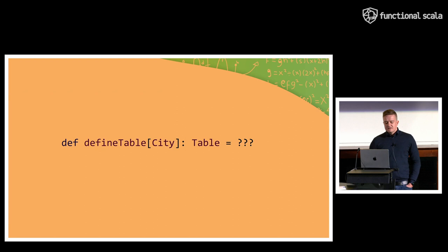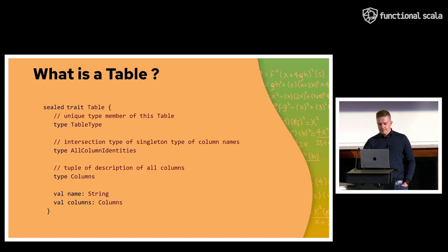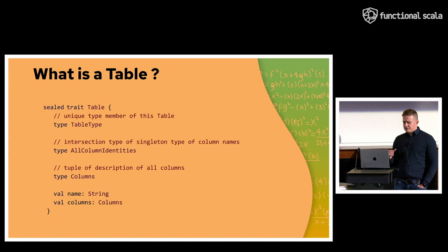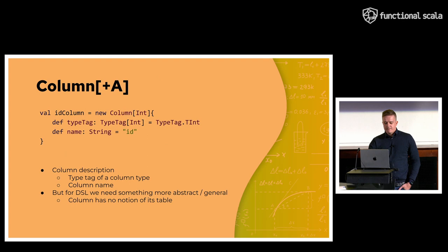So before we can write the implementation of define table, we need to actually know what we are talking about. So let's take a look. What is the table? So the table is a sealed trait, and we need to implement a couple of types and a couple of values. So we need some table type. It can even be abstract type member. All column identities, that would be intersection type of column name singletons. And what we really need is the type and value of columns, which is the tuple of descriptions of our columns. So if we have city, which has five columns, then it would be a tuple of five. And then we need the name of the table. So let me introduce the column. Column is parameterized over the type, and we need a type tag, because not every types are supported in SQL, and we need the column name.